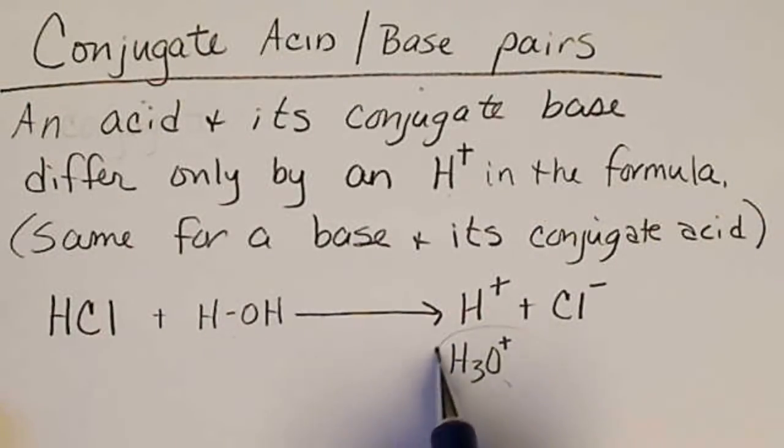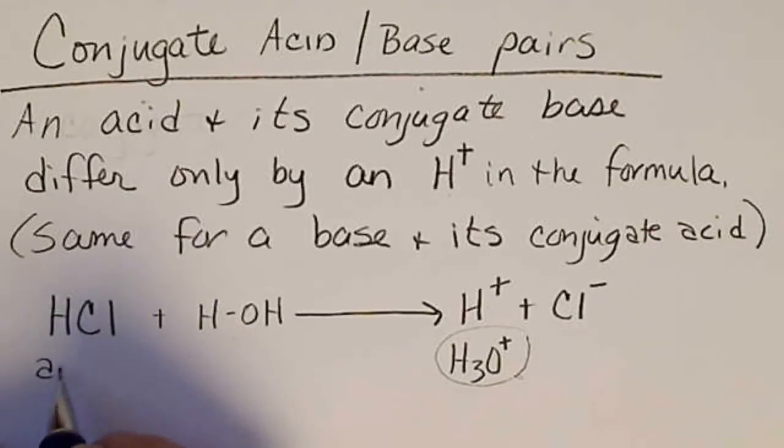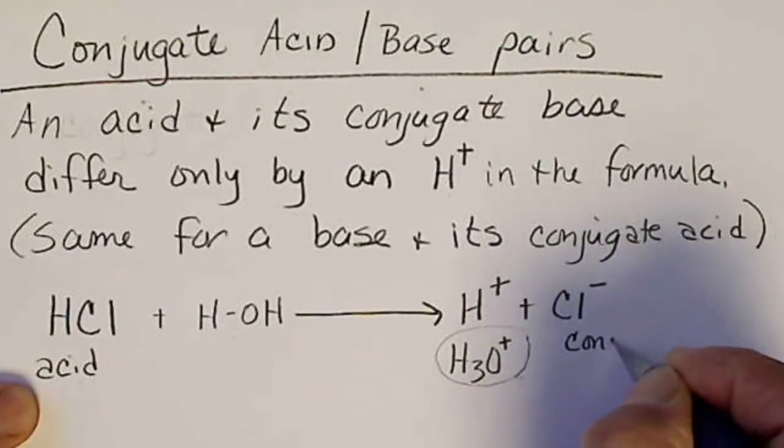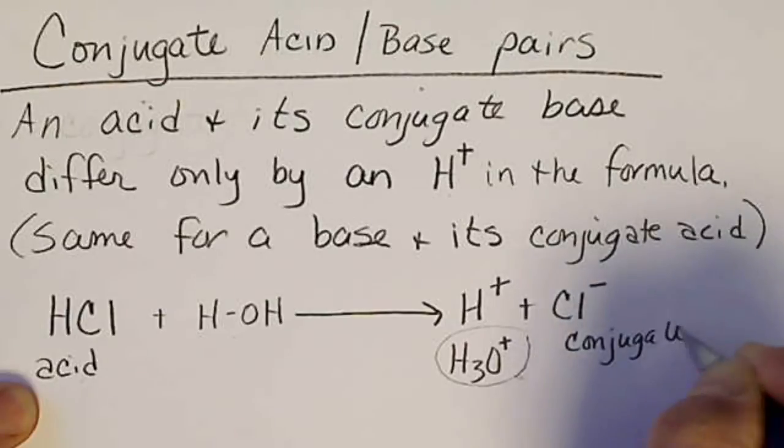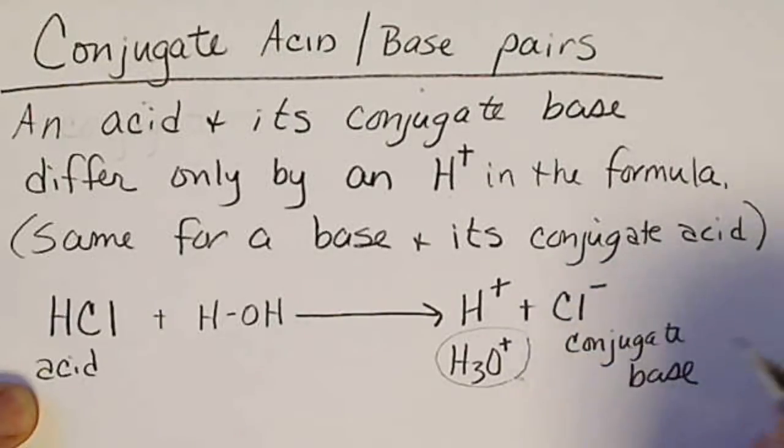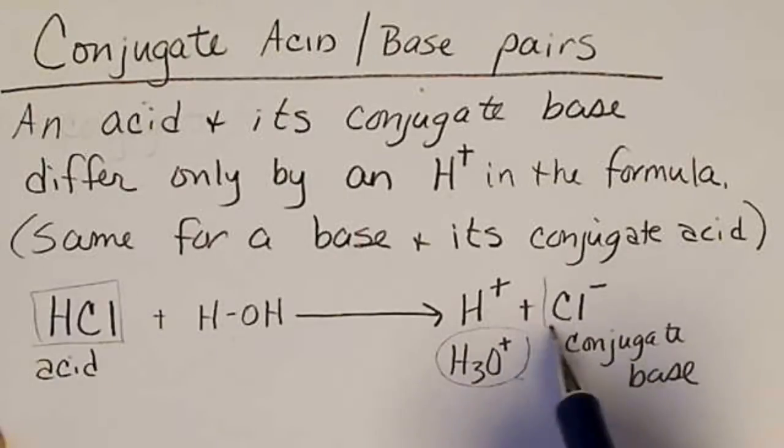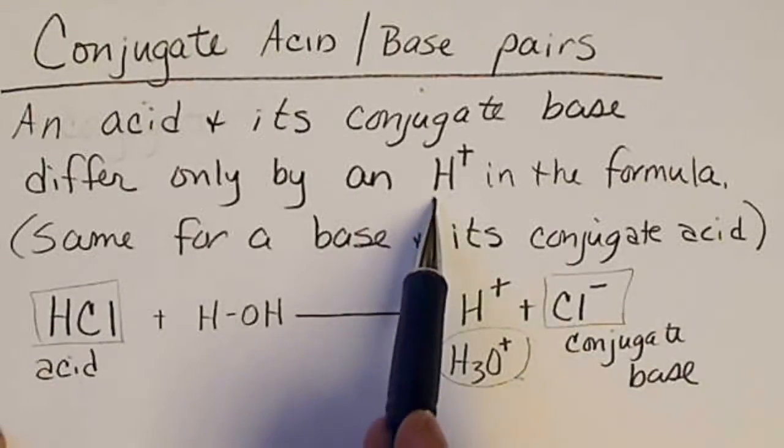So if we write the water in the equation, then this is the acidic proton after it's reacted with water. So in this case, the hydrochloric acid has its conjugate base as a chloride, a chloride ion. And notice the only difference between the formula here and here, the difference is an H+.